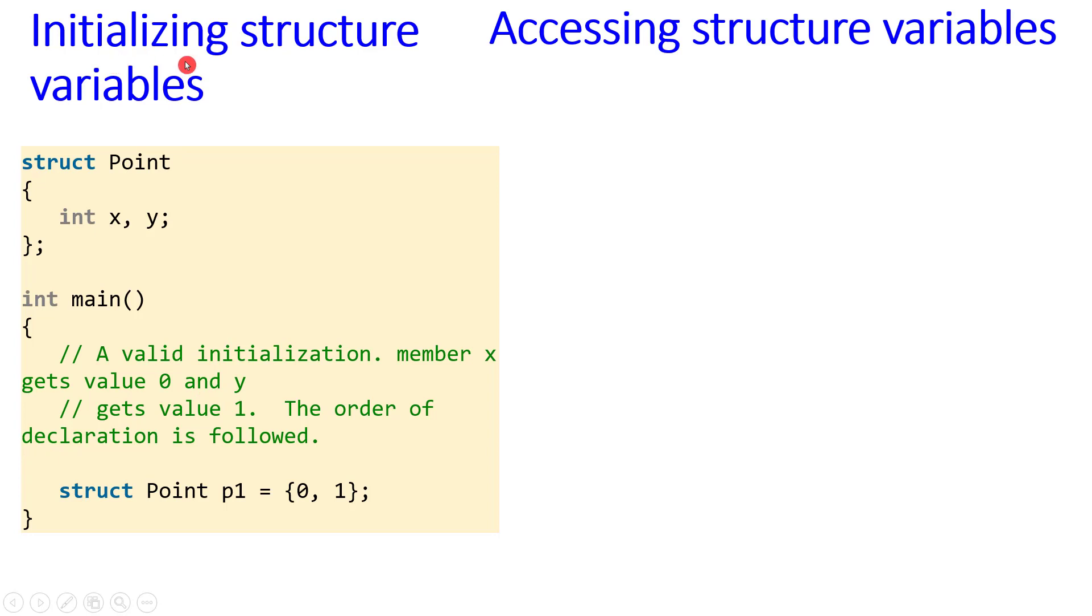Initializing structure variables: struct Point, integer x, y, closing with semicolon. This defines the structure. Then the main program: a valid initialization is required. Member x gets value 0 and y gets value 1. The order of declaration is followed. struct Point p1 = {0, 1}, so zero will be allocated to x and one will be allocated to y.